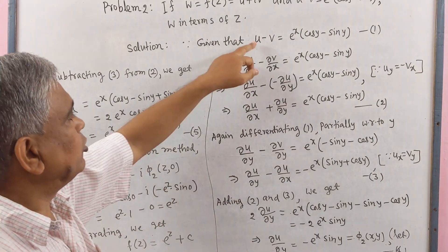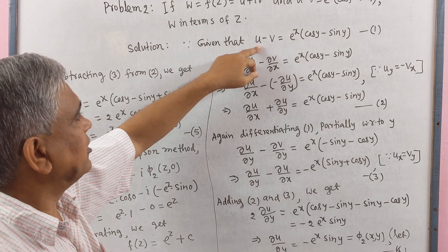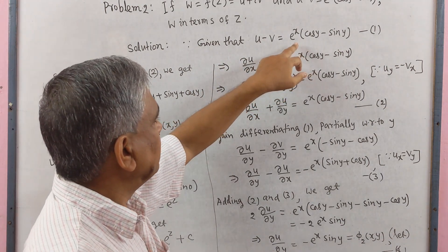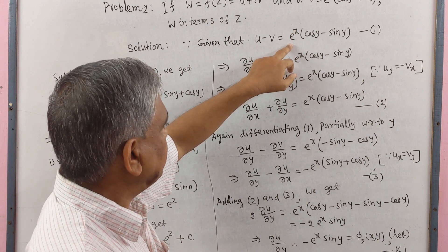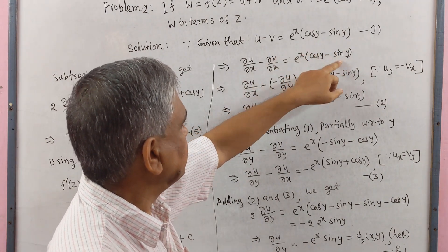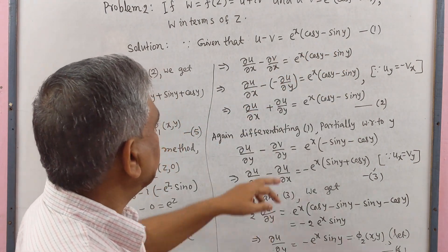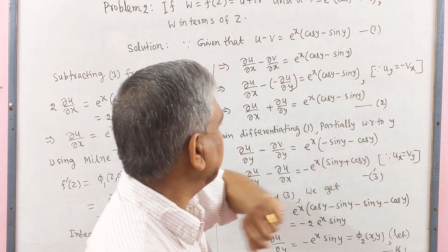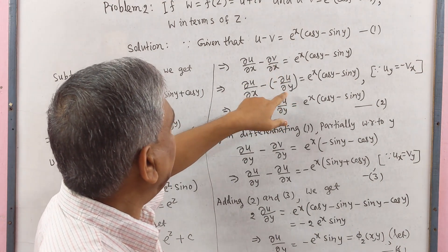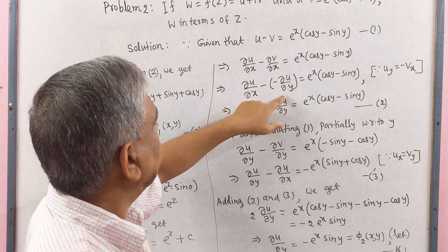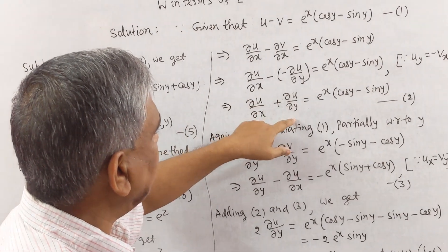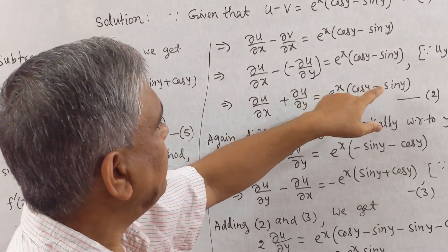Differentiating both sides of equation 1 partially with respect to x: ∂u/∂x − ∂v/∂x = eˣ cos y − eˣ sin y. Since by the Cauchy-Riemann equations v_x = −u_y, we substitute to get ∂u/∂x + ∂u/∂y = eˣ cos y − eˣ sin y. This is equation number 2.